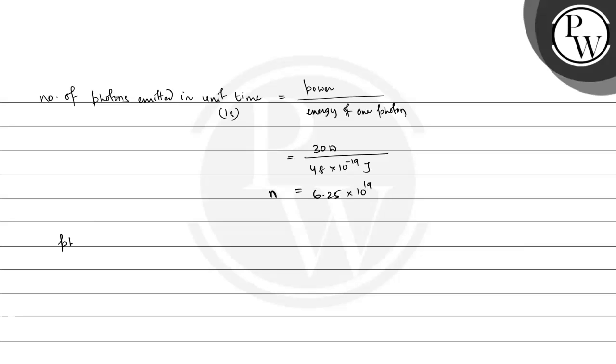And photocurrent is equal to ne. So n is the number of photons emitted per second, this is second inverse, multiplied by the charge of electron. So this is 6.25 multiplied by 10 raised to the power 19 multiplied by charge of one electron, which is 1.6 into 10 raised to the power minus 19 coulomb. So this value is equal to 10 coulomb per second, which is equal to 10 ampere.